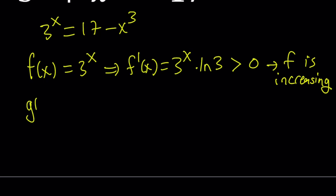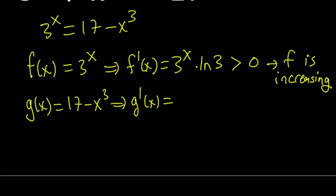So let's also take a look at the other function, which is 17 minus x cubed. And then let's differentiate it too. If you do differentiate it, the derivative of 17 is 0. The derivative of negative x cubed is just going to be negative 3x squared. And this is always negative as long as x does not equal 0.